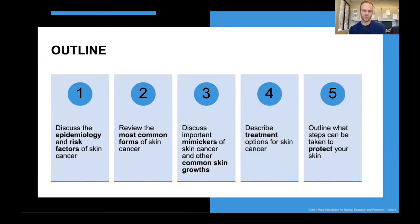I hope to accomplish or discuss these five major points today: discussing the epidemiology and risk factors of skin cancer, reviewing the most common forms of skin cancer, and importantly discussing the mimickers — things that look like skin cancer but aren't — and other common skin growths. We'll briefly discuss the treatment options for skin cancer, and then outline what steps can be taken to protect your skin from developing skin cancer.